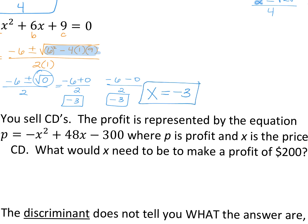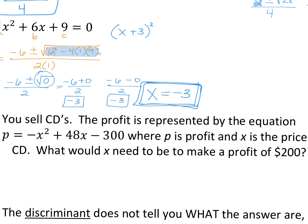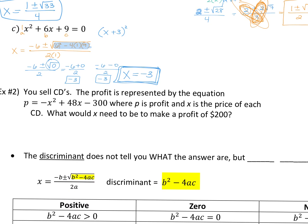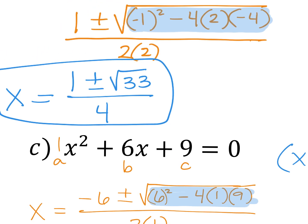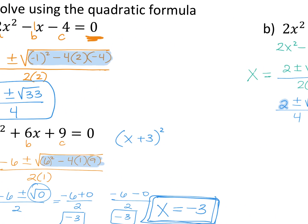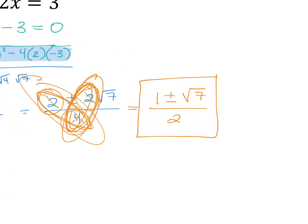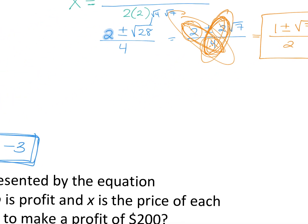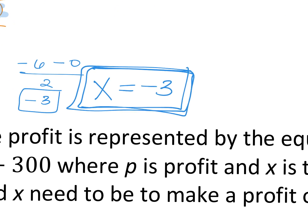Did anyone notice that was actually factorable? This is X plus three squared — it's a perfect square trinomial. So you get one answer of negative three. You don't need to write it twice even though technically we found it twice. The idea with the quadratic formula: sometimes it's not going to be simplifiable at all — that was the first problem. Sometimes there's a radical you can simplify but it still doesn't work out to a nice number. Other times you'll get a nice integer answer, or maybe two integers.